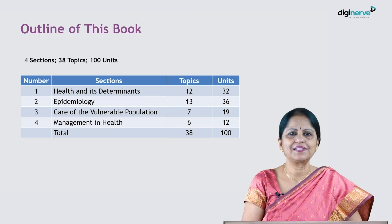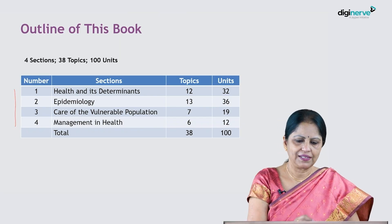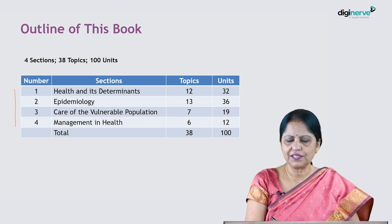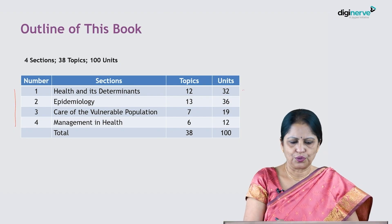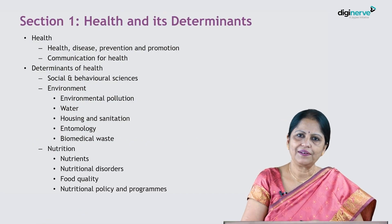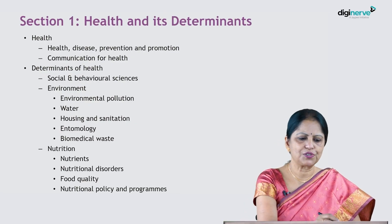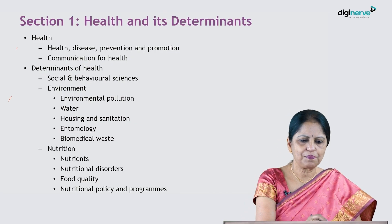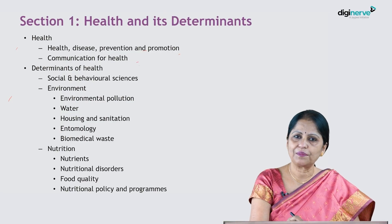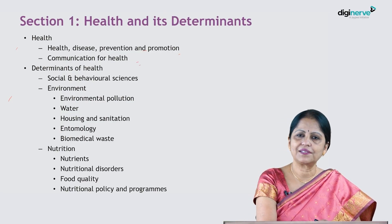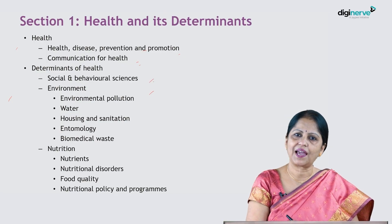This e-learning book on community medicine groups the entire syllabus under four sections, each with several topics divided into sub-topics presented as units — totalling 38 topics and 100 units. Section 1 is on health and its determinants, with two parts. The health part includes concept of health, concept of disease, disease prevention, health promotion, and communication for health. The determinants of health part includes social and behavioral sciences, environment, and nutrition.